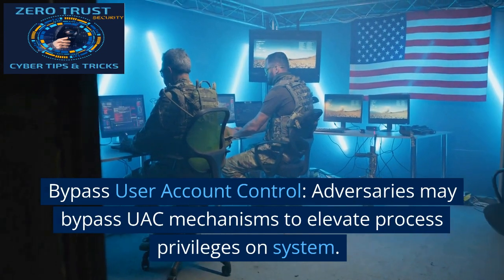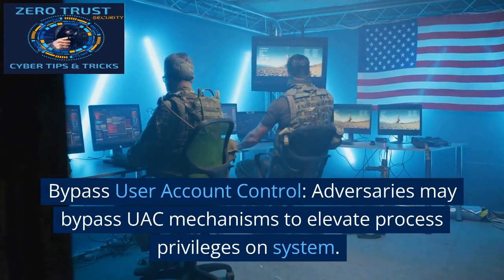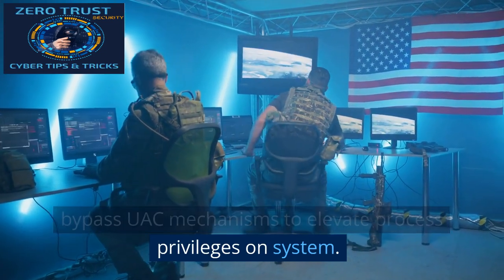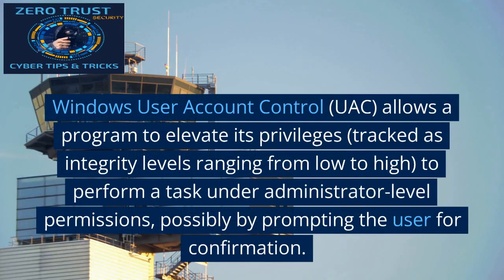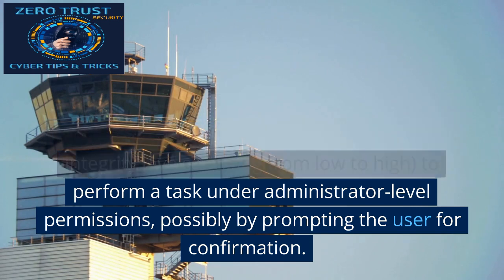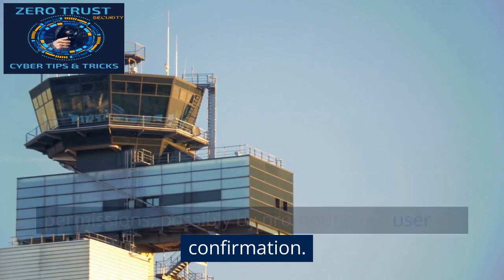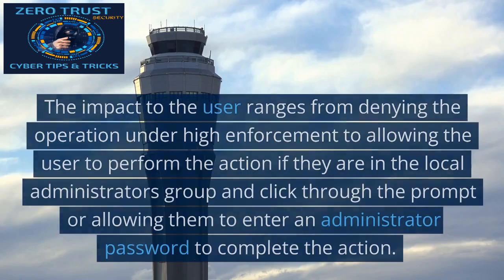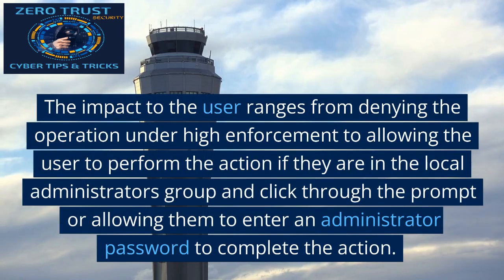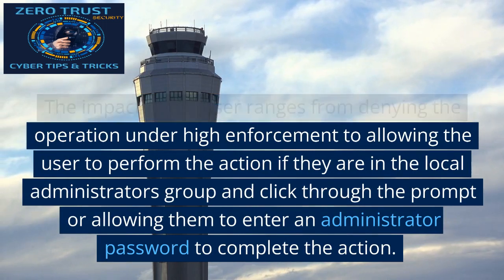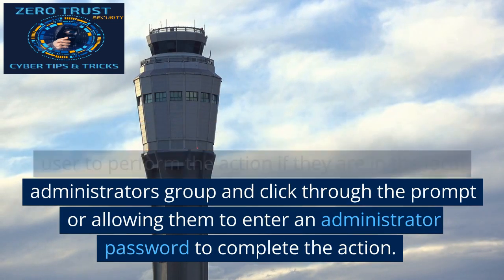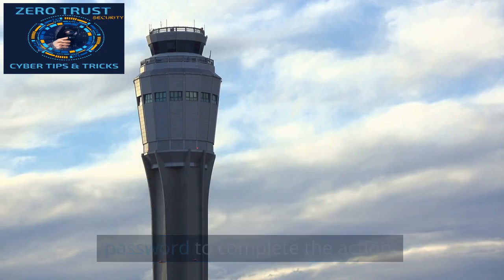Bypass User Account Control: adversaries may bypass UAC mechanisms to elevate process privileges on a system. Windows User Account Control (UAC) allows a program to elevate its privileges, tracked as integrity levels ranging from low to high, to perform a task under administrator-level permissions, possibly by prompting the user for confirmation. The impact to the user ranges from denying the operation under high enforcement to allowing the user to perform the action if they are in the local administrators group and click through the prompt, or allowing them to enter an administrator password to complete the action.